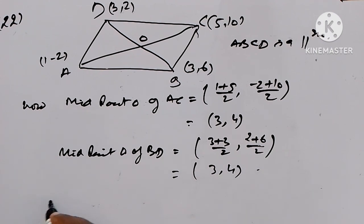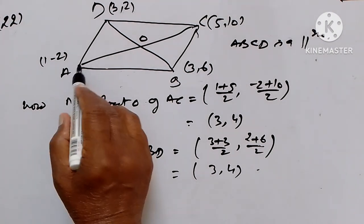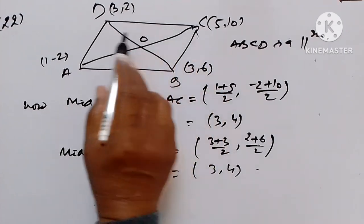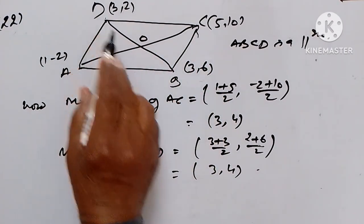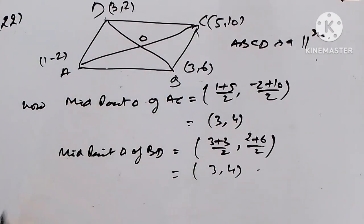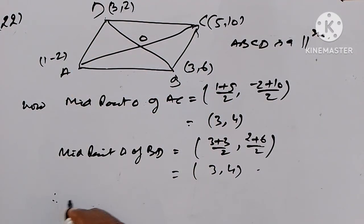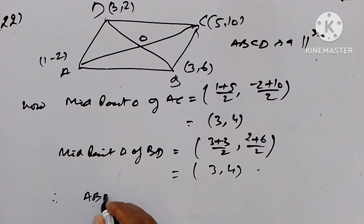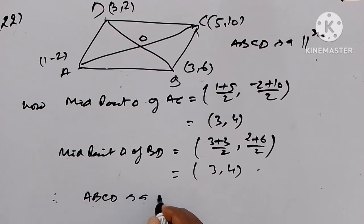Now we see that the midpoint of AC and BD are the same. Therefore ABCD is a parallelogram. Hence proved.